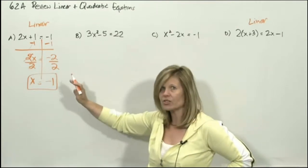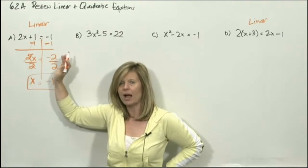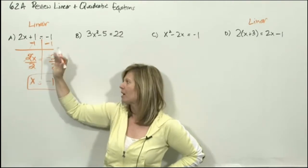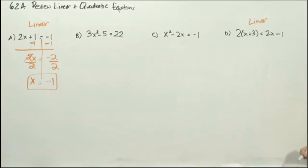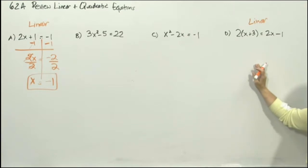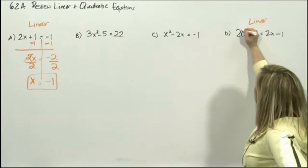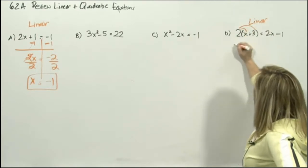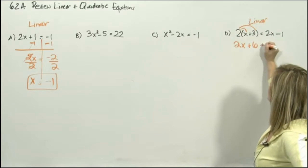So linear equations — there's only one method to solve. Get x on the left, get the numbers on the right, by moving them using the opposite operation, and you should get one solution. Let's go down to equation d. What makes this linear equation a little bit different is you have a set of parentheses. You can't physically add an x to a 3, so we use the distributive property to get rid of the parentheses. So 2 times x is 2x, and 2 times 3 is 6.